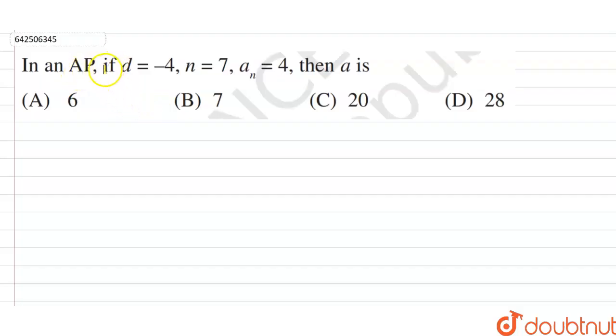Hi students, our question is, in an AP, if D is equal to minus 4, N is 7, An is 4, then the value of A is?